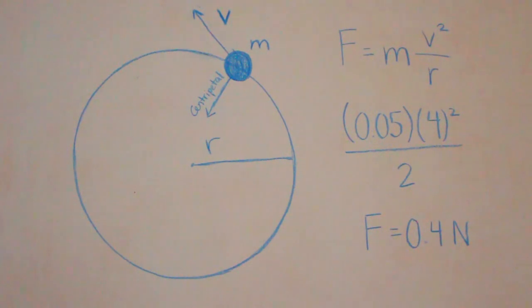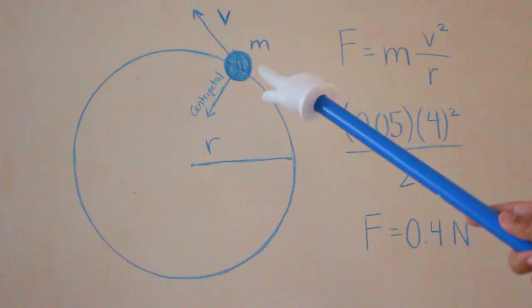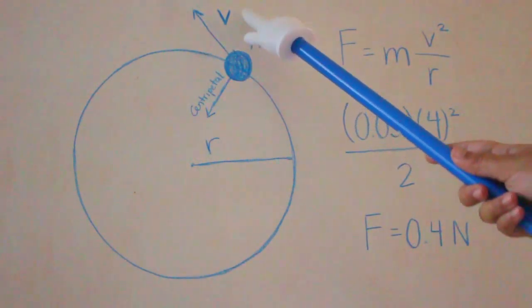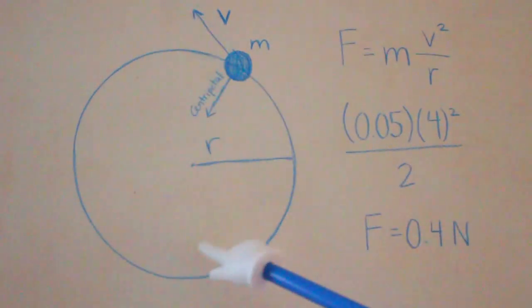We can calculate the centripetal force with the equation force equals mass times velocity squared over radius. Let's say we have a ball traveling in a circle. The ball, which is the mass, wants to travel in a straight line, but the centripetal force moves it in a circular path instead.